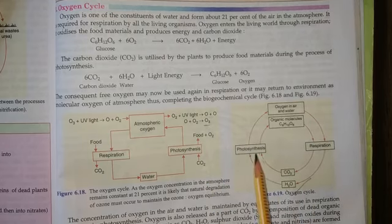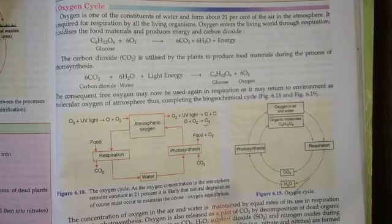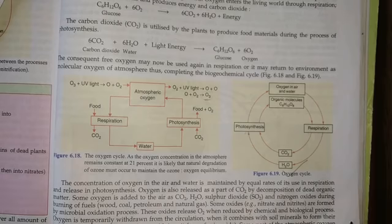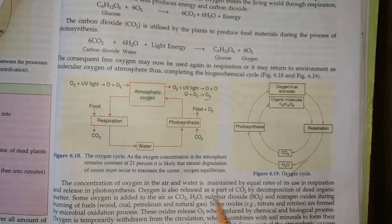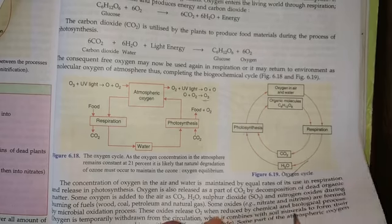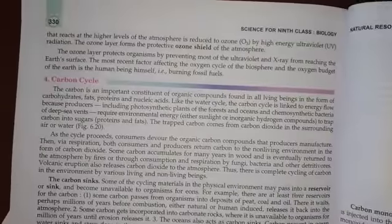So the oxygen cycle basically depends on two processes: photosynthesis and respiration. Concentration of oxygen in air and water is maintained because there are two processes, respiration and photosynthesis. Oxygen is released as a part of CO2 for the decomposition of dead organic matter. Oxygen can be added to the air as CO2, H2O, sulfur dioxide, nitrogen oxide during burning of fuel through microbial oxidation process. So this is all about the oxygen cycle.